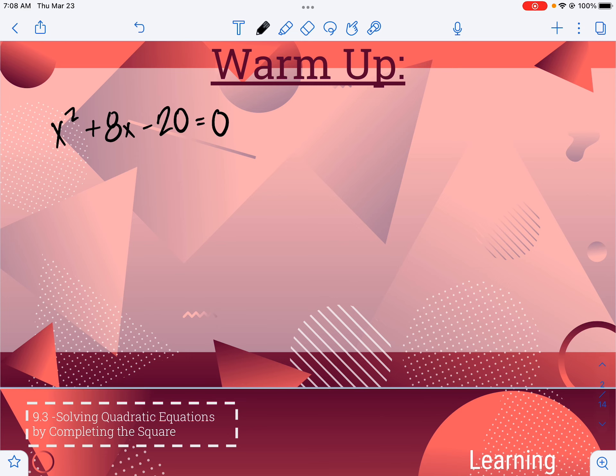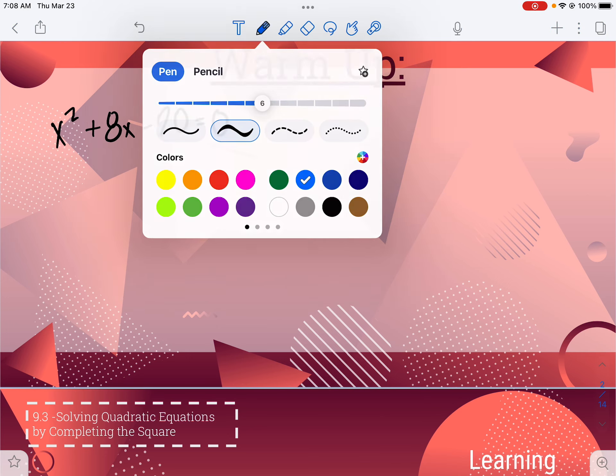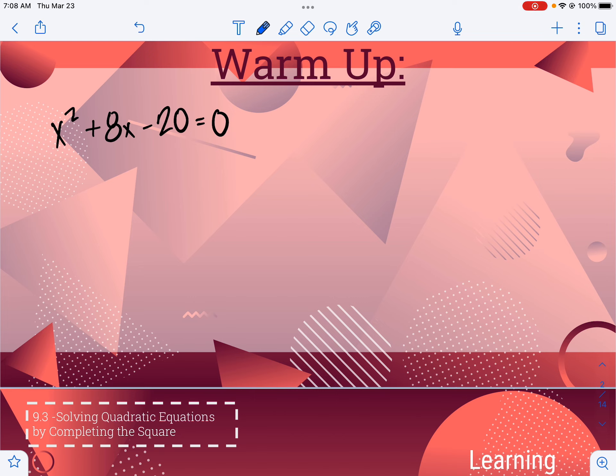So the first thing that we need to do to complete the square is we have to decide what our c value is. Right now, they're telling us that our c value is negative 20. Remember, this is ax², this is bx, and this is c. They're telling us c is negative 20, but we have to decide what c is in order for this to work. So the first thing we're going to do is add 20 to both sides, and I'm going to leave a gap right there because we're going to decide what c is.